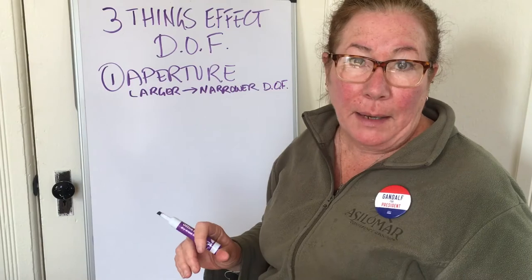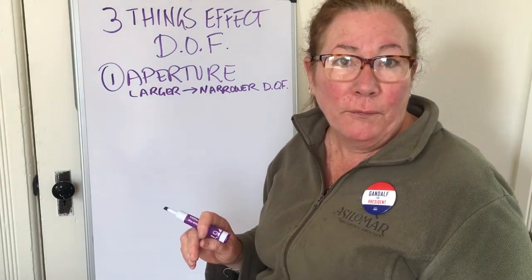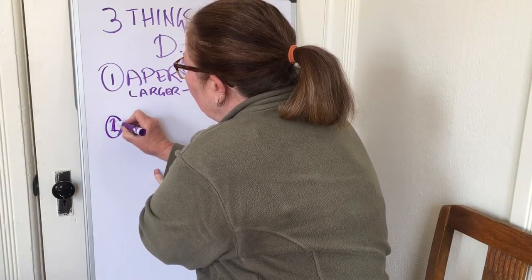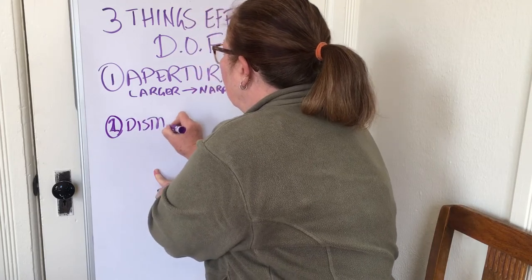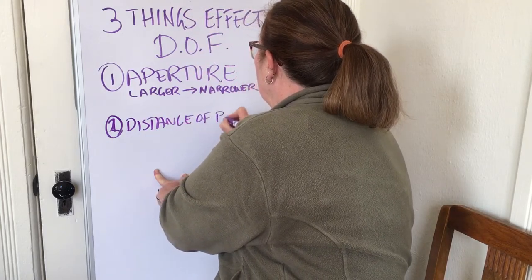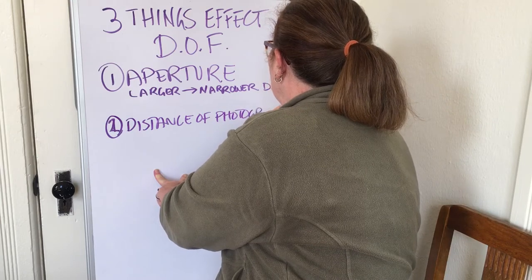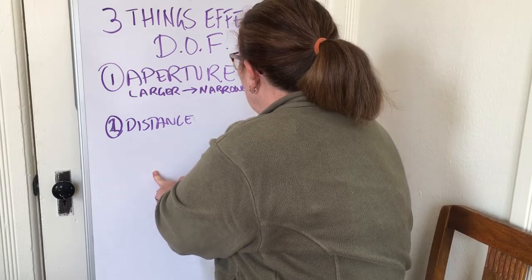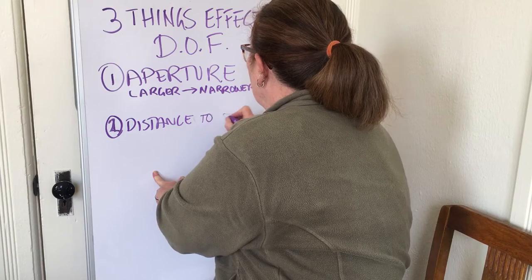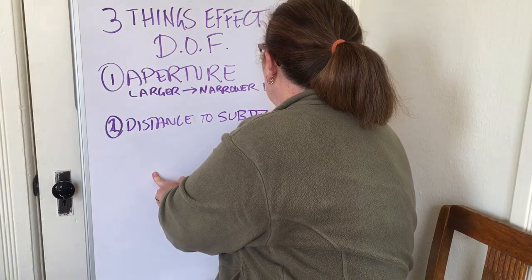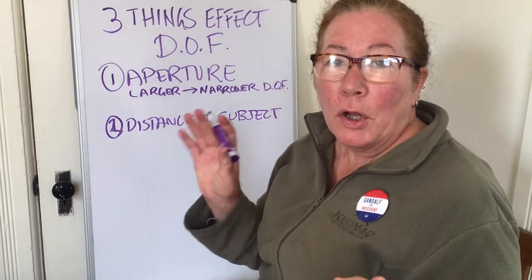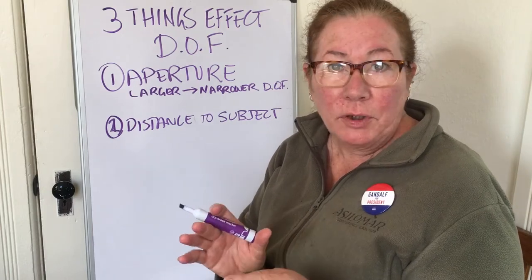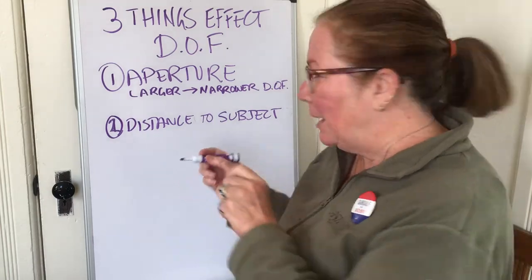The second thing that affects depth of field is the distance of the photographer to the subject. The closer you are to the subject, the narrower the depth of field.